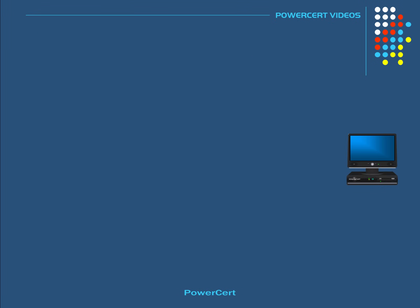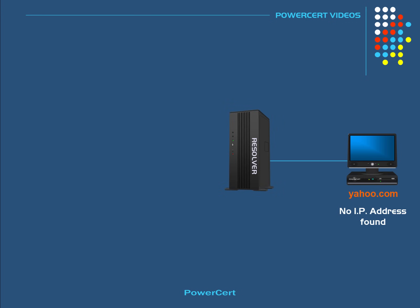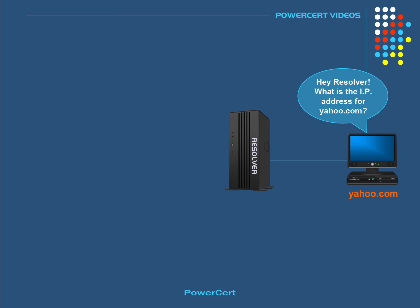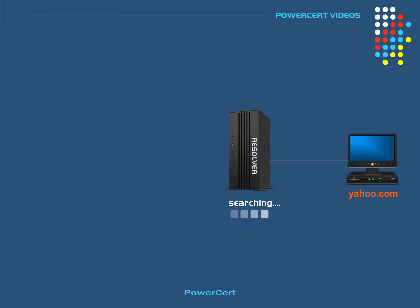So to break this down into further detail, let's examine the steps that DNS takes. When you type in yahoo.com in your web browser, and if your web browser or operating system can't find the IP address in its own cache memory, it will send the query to the next level, to what is called the resolver server. The resolver server is basically your ISP or Internet Service Provider. When the resolver receives the query, it will check its own cache memory to find an IP address for yahoo.com.